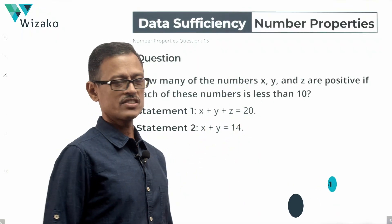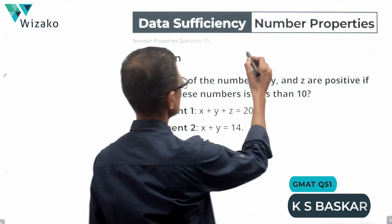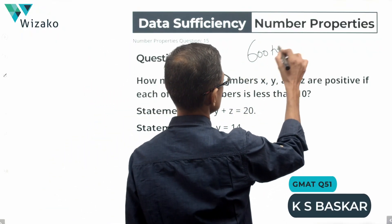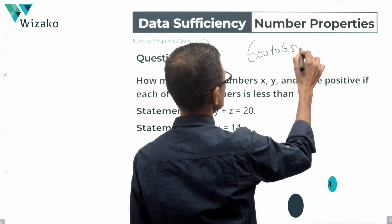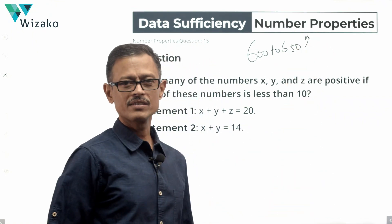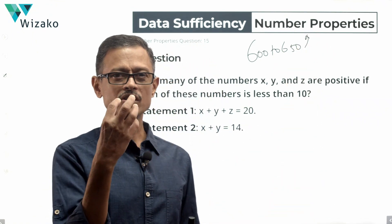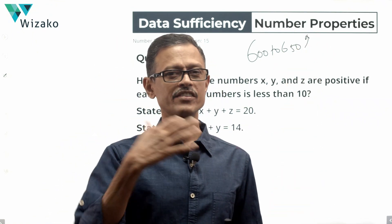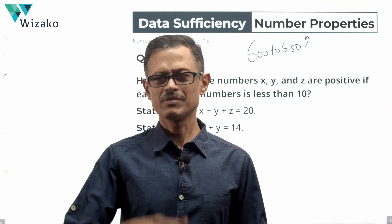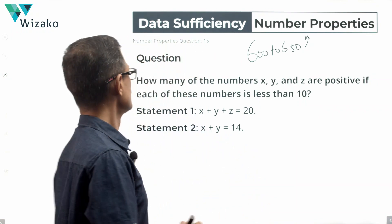This is a medium difficulty question. I will classify it as a GMAT 600 to 650 level Data Sufficiency question in number properties. A lot of logical deduction is what is needed to solve this question. Lovely question.